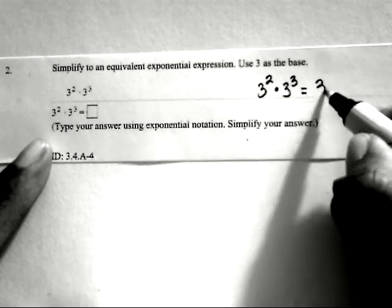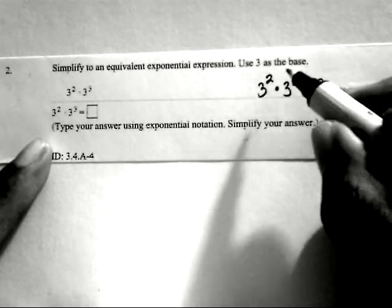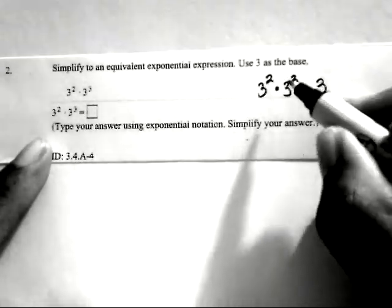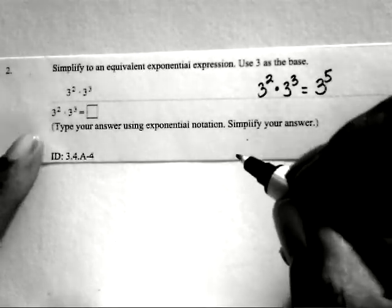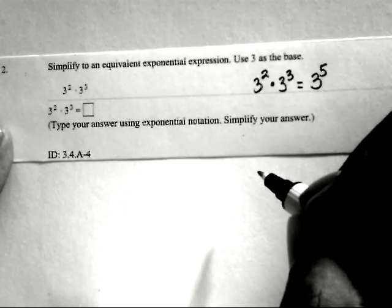So we're going to be applying the product rule by bringing over the base, which is 3, and then add your exponents. 2 plus 3 is 5. So 3 to the second times 3 to the third will be 3 to the fifth as your final answer.